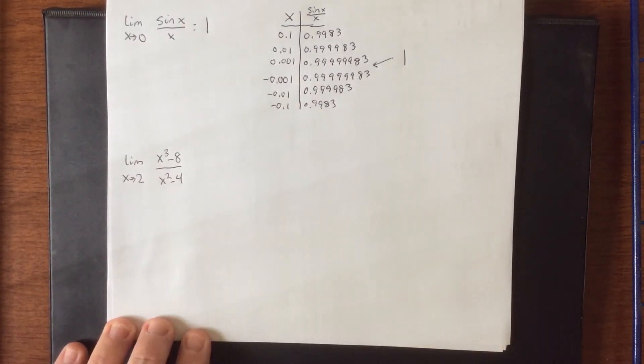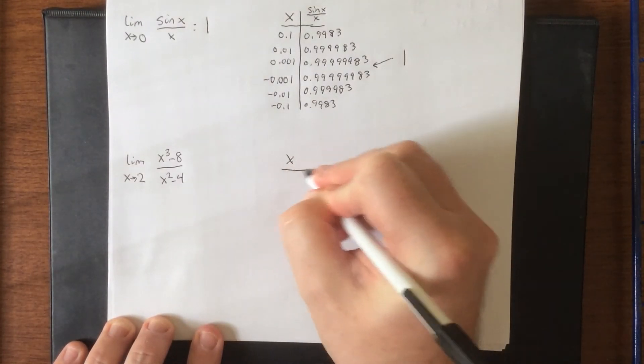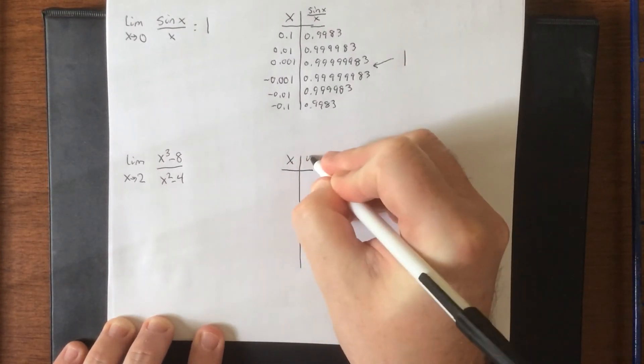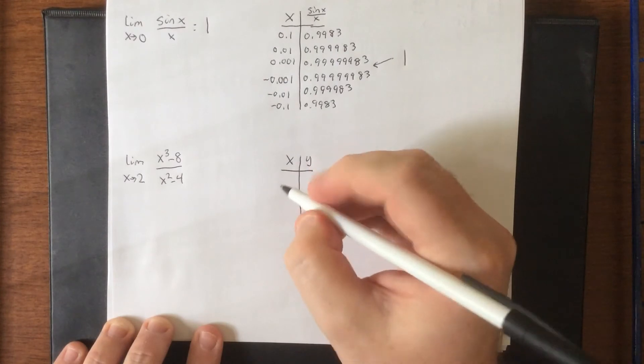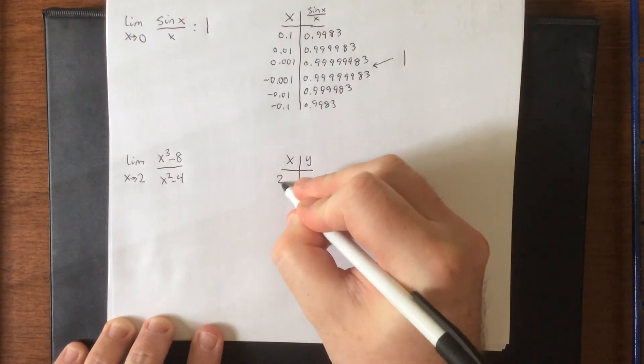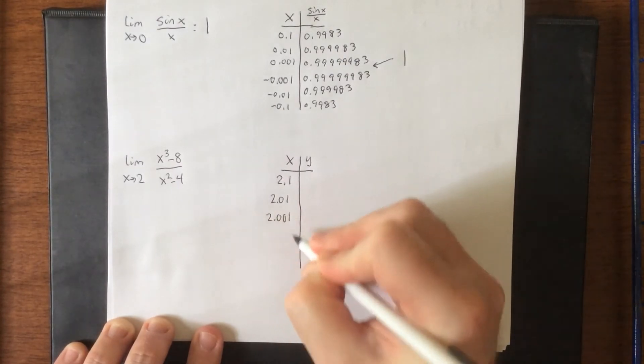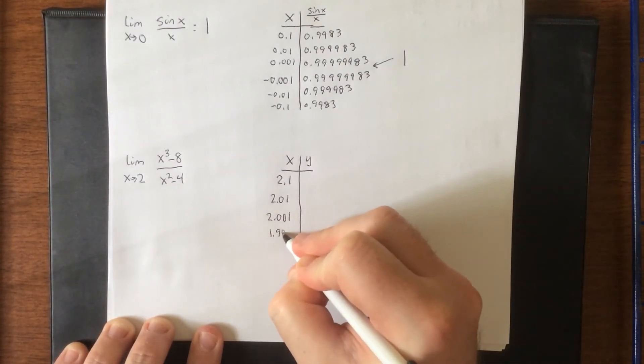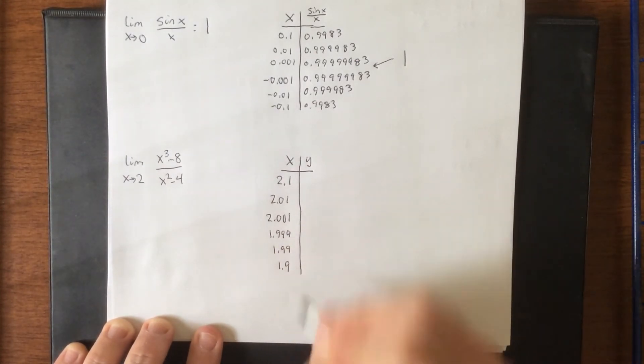So limit as x approaches 2 of x cubed minus 8 over x squared minus 4. So once again, I'm going to create a table of values. I would like to go on either side of 2. So I will add 0.1, add 0.01, add 0.001, subtract 0.001, subtract 0.01, and subtract 0.1 from 2.